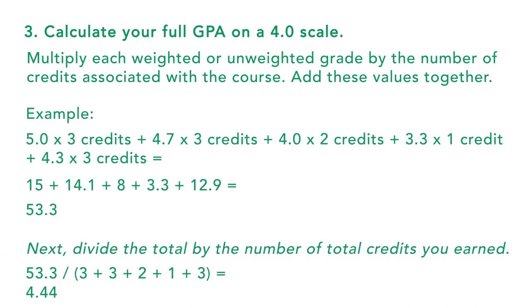Step number three is to calculate your full GPA on a 4.0 scale. To begin, you'll multiply each weighted or unweighted grade by the number of credits associated with the course, then add those values together. Let's walk through an example: 5.0 × 3 credits + 4.7 × 3 credits + 4.0 × 2 credits + 3.3 × 1 credit + 4.3 × 3 credits equals 15 + 14.1 + 8 + 3.3 + 12.9 equals 53.3. Next, divide the total by the number of total credits earned: 53.3 ÷ (3+3+2+1+3) equals 4.44.